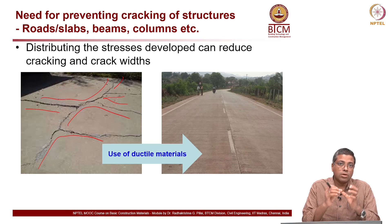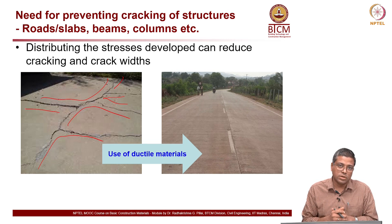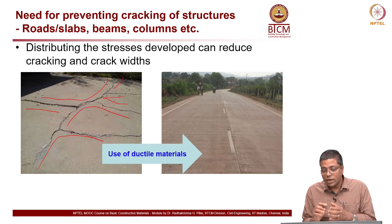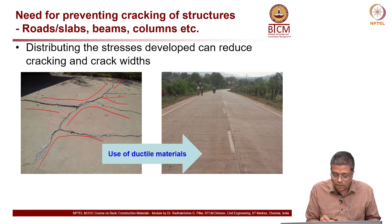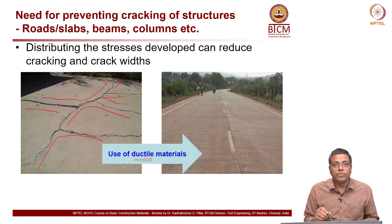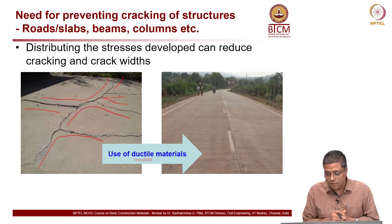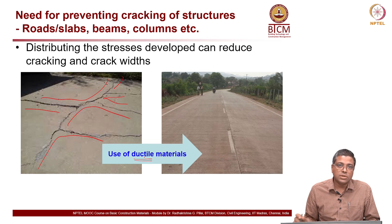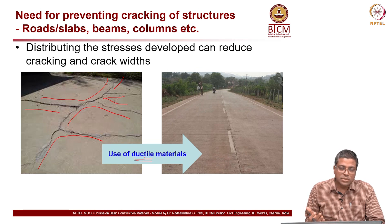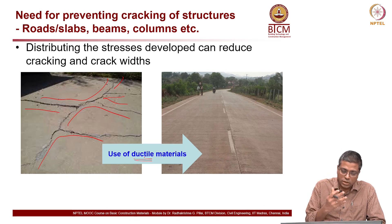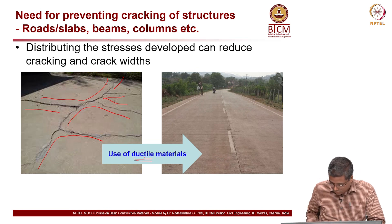Plain concrete will crack; it will not bend or deform as expected from a reinforced concrete system. On the right side, some kind of ductile system — possibly reinforced concrete or fiber reinforced concrete — is being used. Because of this ductile behavior, the road on the right side does not crack the way the left side does. Even if it does crack, you see many smaller cracks rather than large wide ones, because the stresses are distributed due to the presence of steel reinforcement or fibers.